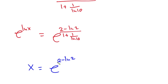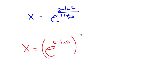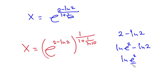So x is equal to e to the power of (2 minus natural log of 2) over (1 plus 1 over natural log of 10). Now let's focus on the numerator: 2 minus natural log of 2. The 2 can be written as natural log of e squared, so 2 minus natural log of 2 becomes natural log of e squared over 2.